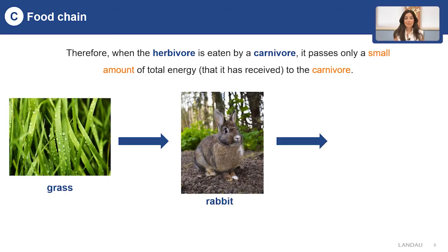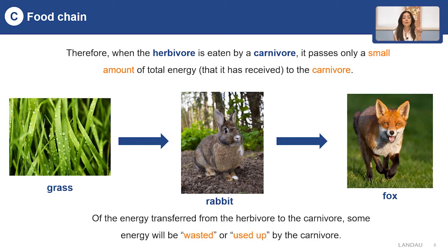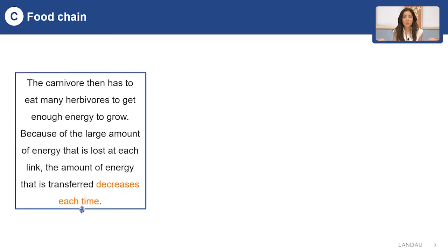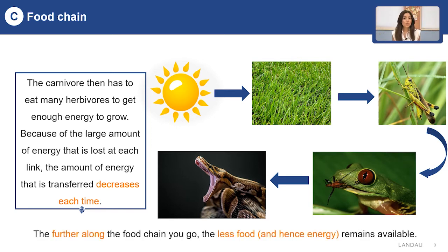Look at the slide. You can see a simple food chain which starts from the grass, where the rabbit eats grass and the fox eats the rabbit. Energy transfers from the herbivore to the carnivore, and some energy will be wasted or used up. It means the carnivore needs to eat many herbivores to get enough energy to grow. Because of the large amount of energy lost at each link, the amount of energy transferred decreases each time. The further along the food chain you go, the less food and energy remain available.